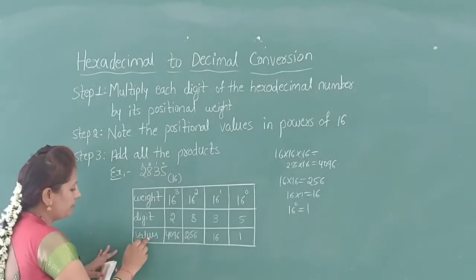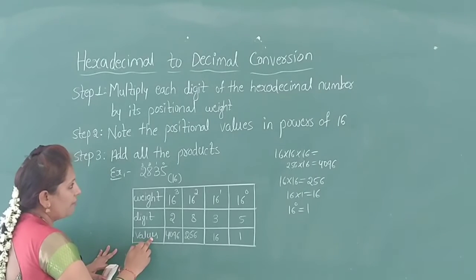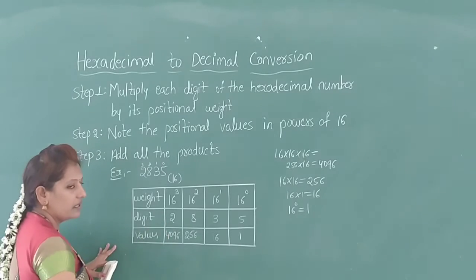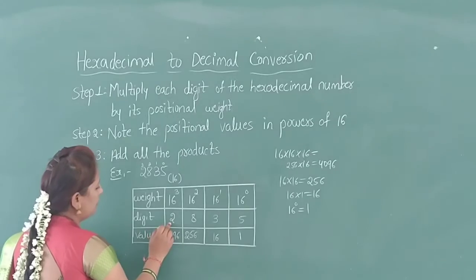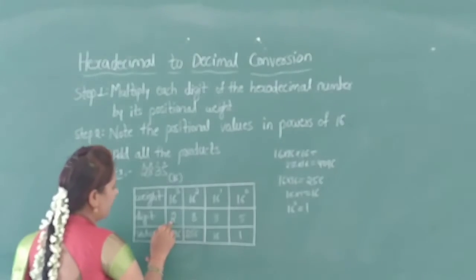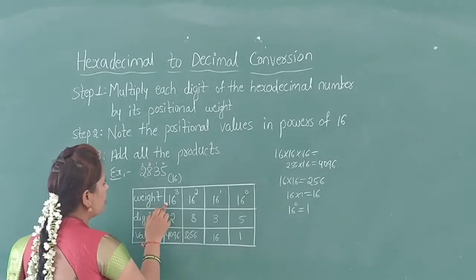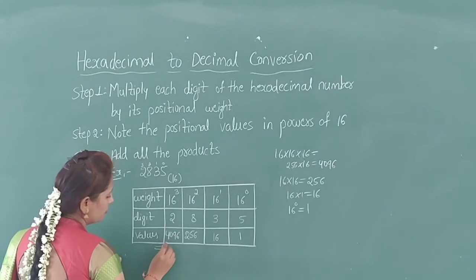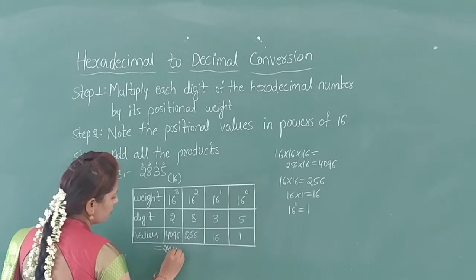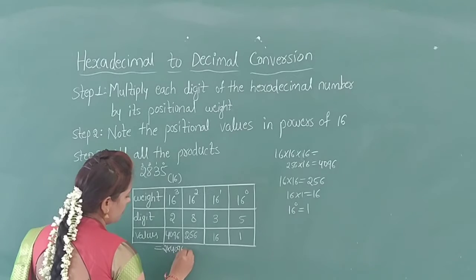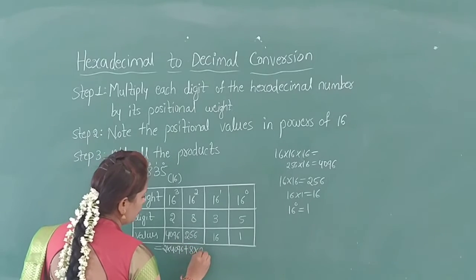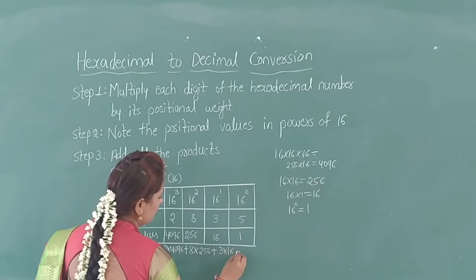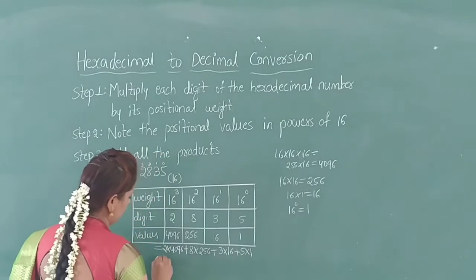Next, multiply the positional values in powers of 16 by the hexadecimal number — that is, multiply each digit of the hexadecimal number by its positional weight. So: 2 into 4096, plus 8 into 256, plus 3 into 16, plus 5 into 1.